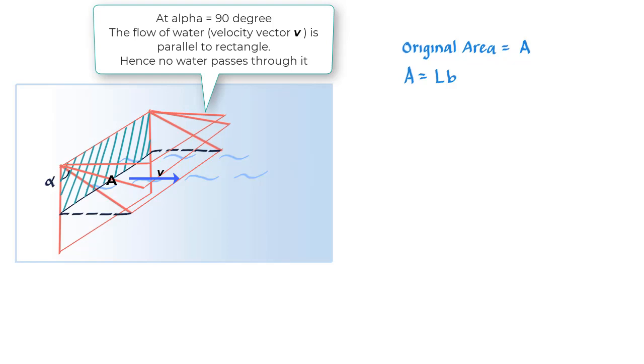If we agree that the water flows through this area only, which is clearly less than A and is actually equal to A cos alpha, since while the length of the original rectangle is still the same, the other side has reduced by a factor of cos alpha.